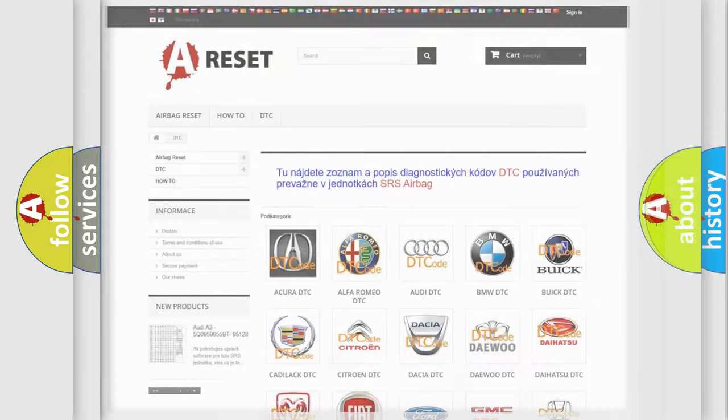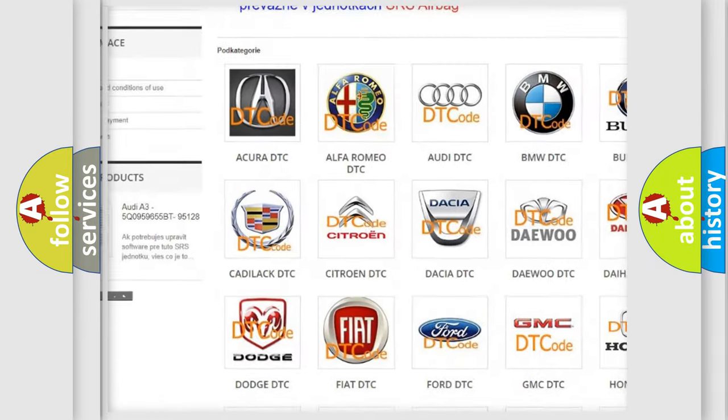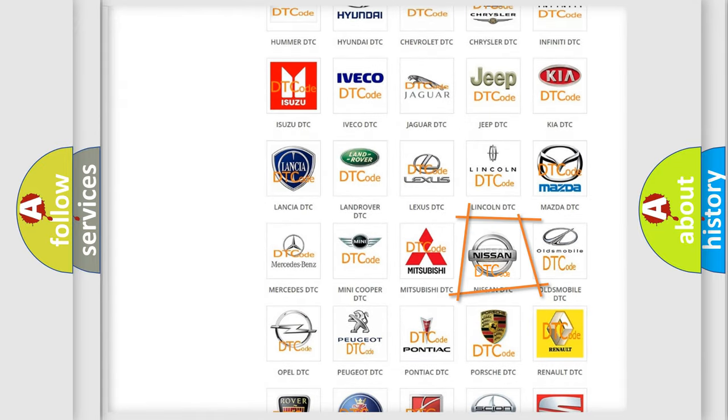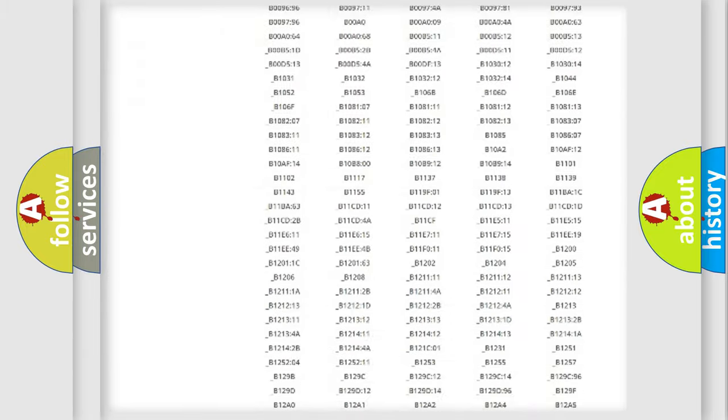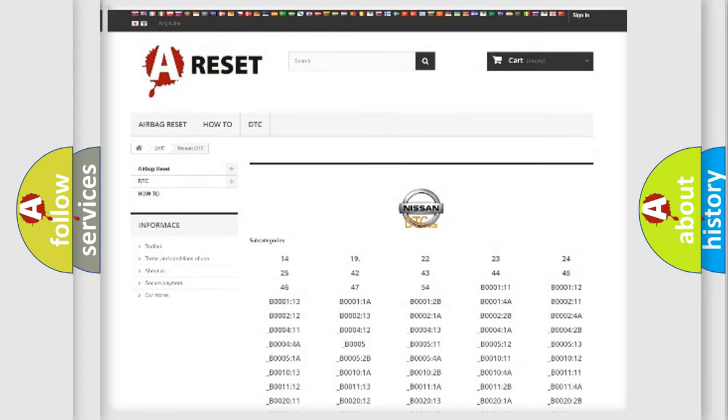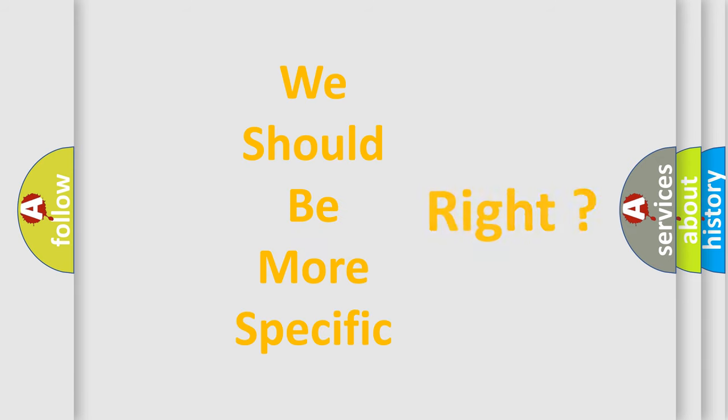Our website airbagreset.sk produces useful videos for you. You do not have to go through the OBD2 protocol anymore to know how to troubleshoot any car breakdown. You will find all the diagnostic codes that can be diagnosed in Nissan vehicles, and many other useful things. The following demonstration will help you look into the world of software for car control units.